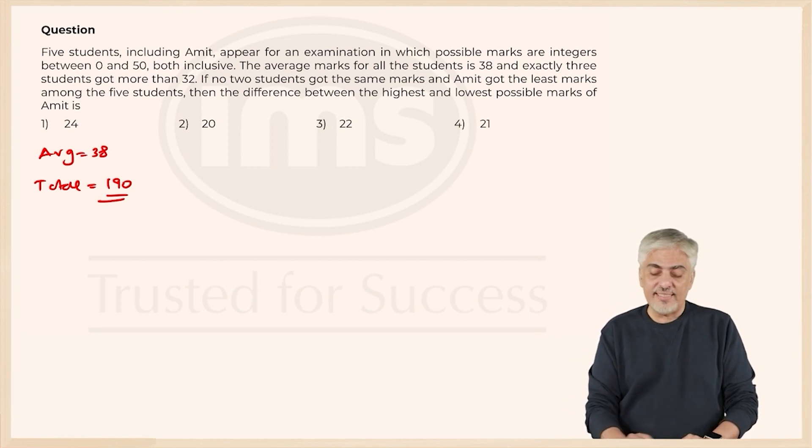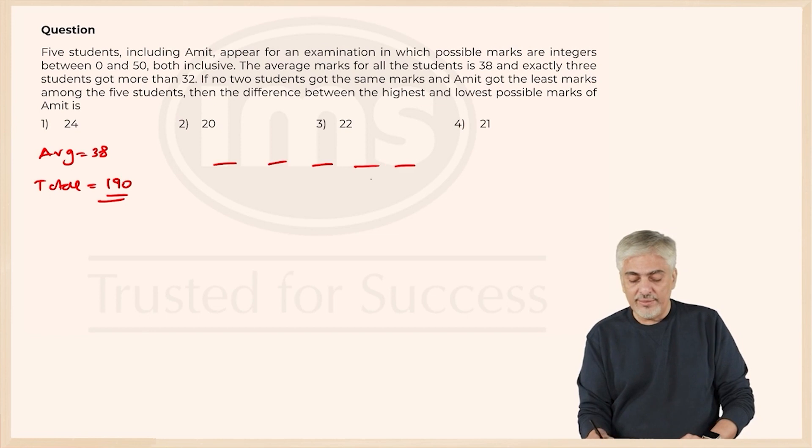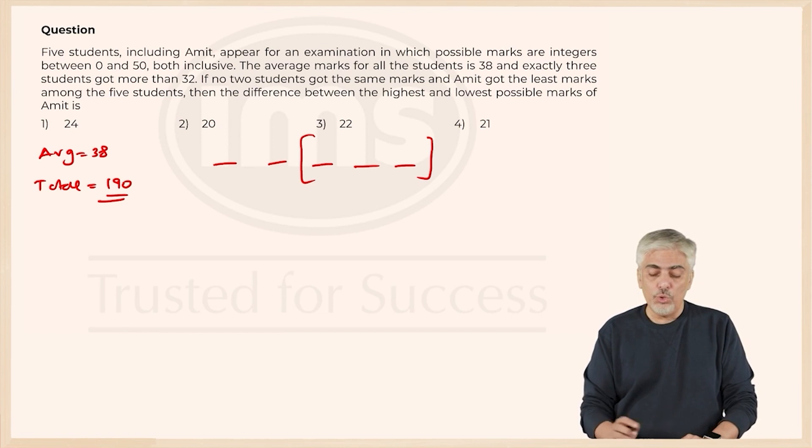The average marks for all the students is 38 and exactly 3 students got more than 32. So 5 are there where 3 of them have got more than 32. If no 2 students get the same score, that means everybody gets a different score, and Amit got the least score.